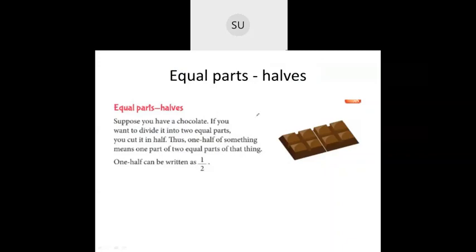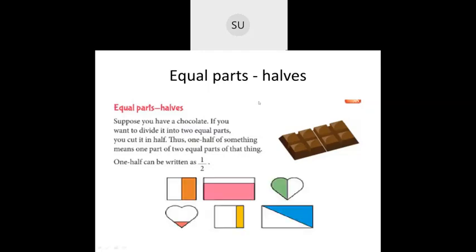Two equal parts are called halves. How do you write half? You write half as one by two — 1/2. This is how you write half. One half of something means one part of two equal parts of that thing. So here we divided this chocolate into two equal parts, and one part of these two equal parts will be one half.